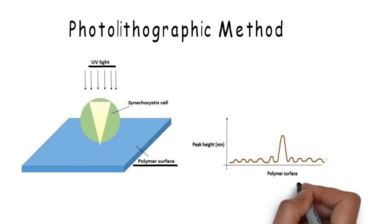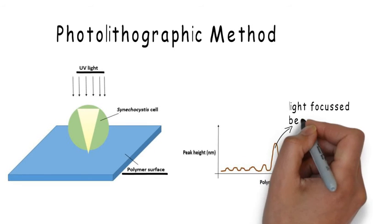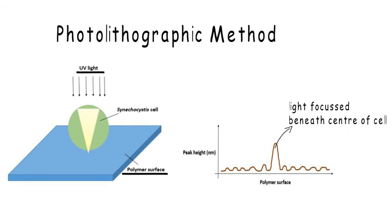Scattering patterns were obtained on the polymer surface with a sharp and intense peak beneath the center of each cell. Thus, light was focused at a point on the cell membrane opposite to the source of light.